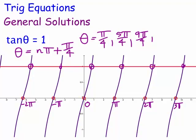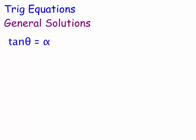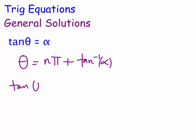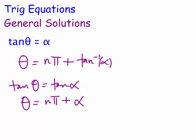So the general solution for tan θ = α is θ = nπ + tan⁻¹(α). If written as tan θ = tan α, then the general solution is simply θ = nπ + α. Thank you for watching — this was a quick look at how general solutions for trig equations are derived, and I'll do some worked examples further down the track. Bye for now.